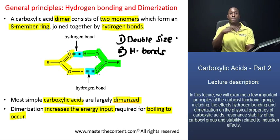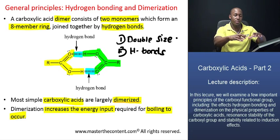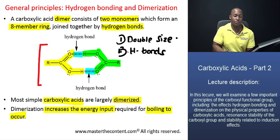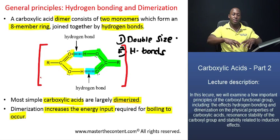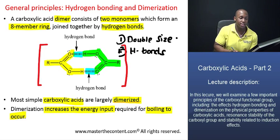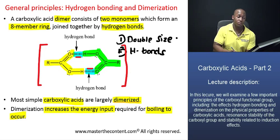So what would you want to do if you wanted to boil or vaporize this dimer on the screen? You'd need to do it in one of two ways. You could either vaporize the entire dimerized structure on its own, which would require significant additional energy input, or you could input energy to break those hydrogen bonds — to break up the dimers and make it easier to boil and vaporize them.